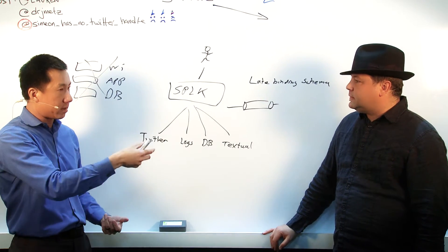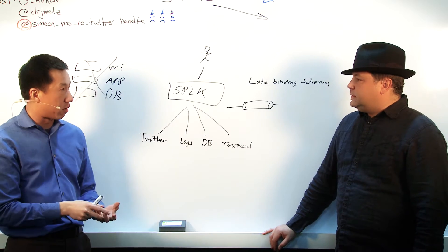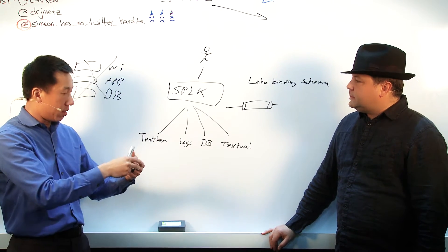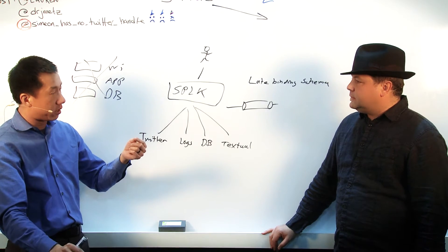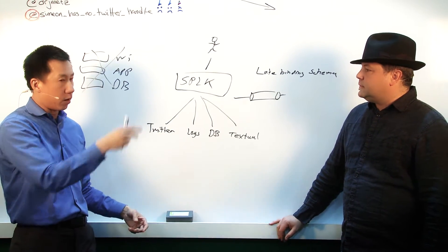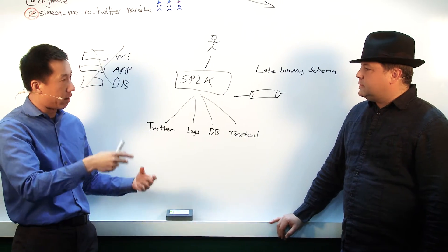Well, what Splunk is great at is we can take all those different data sets and we can tie them together and tell you where the hotspots are, but also correlate whether or not it's driven by something that's downstream such as the storage or the network. Well, you don't want to blame the storage if it's really a network problem. I agree with you completely, and that's what we do very well.